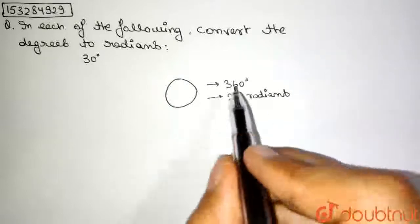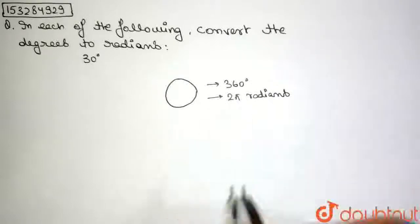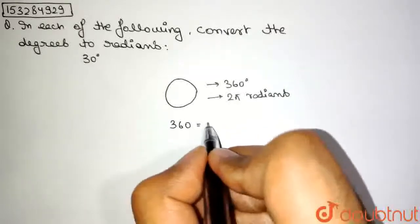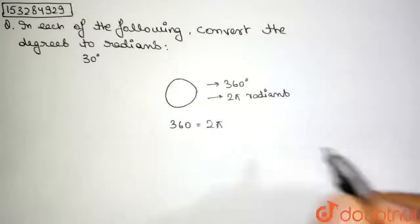So we have a relation between radians and degrees. We could write: 360 degrees is equal to 2π in radians.